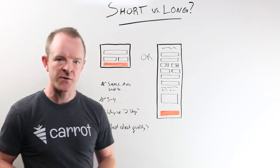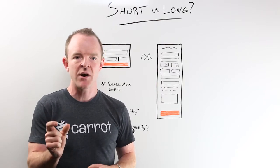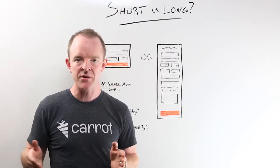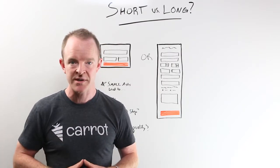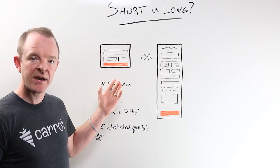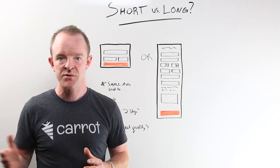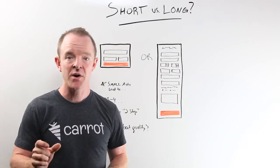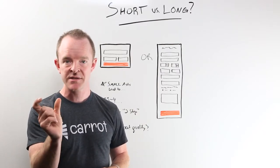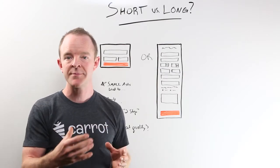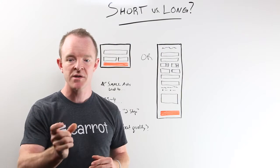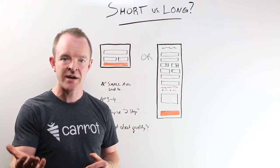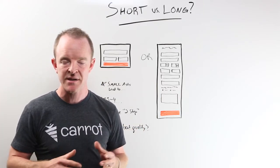We like to do small asks first — find very simple questions that are easy for them to answer, which lead to the big ask later. For a motivated house seller website, what we like to do is address, phone number, and email address. We don't care about their first name at this point. All we care about is their address, which is a very low-resistance ask, their phone number — which you can make optional or required — and then email, so you have two points of contact.